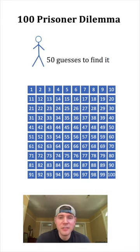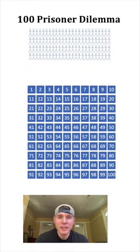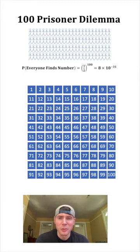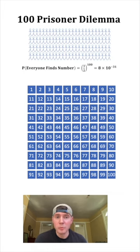If we look at one individual prisoner, if this prisoner chooses 50 boxes at random, their chance of success is 50%. And apparently there is nothing the individual can do to improve their probability of success. And if we look at the total group, if each person chooses a box at random, the chance that the whole group will find each of their individual boxes is 1/2 to the 100 power, which is approximately 8 times 10 to the negative 31, which is basically impossible.